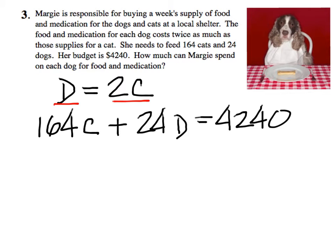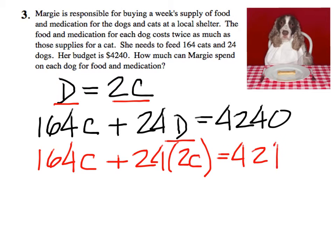What about taking out the D and replacing it with 2C? When I do that, I still have 164C but now I have 48C right there with it.